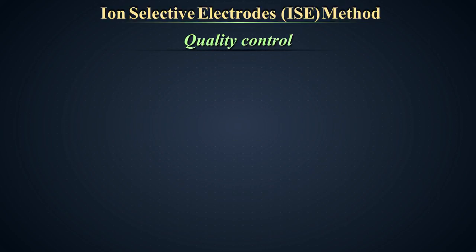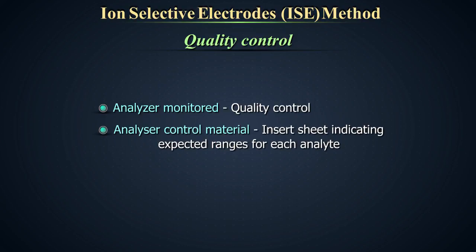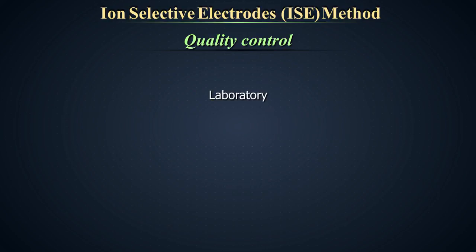Quality control. As with all clinical instrumentation, the performance of this analyzer must be monitored using quality control. Each lot of analyzer control material contains an insert sheet indicating the expected ranges for each analyte. Each laboratory should establish their own quality control program. As part of a good quality control program, each laboratory should establish their own ranges for each lot of controls. These ranges should be calculated from results collected over multiple days.